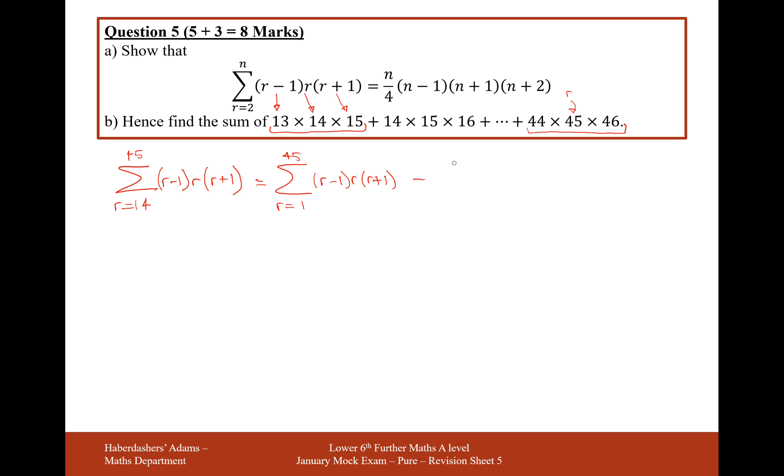And what we're going to have to do next is subtract all of the terms. Well, if I want to keep all of my terms from 14 up to 45, then I'll have to take away the terms that go up to 13, because then that will leave me with just the summation of the r values from 14 to 45 of r minus 1, r, r plus 1. So what I'll do then is substitute 45 into this formula here and take away 13 substituted into this formula here.